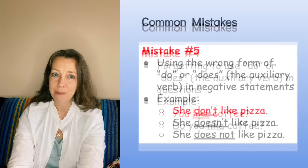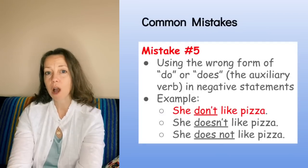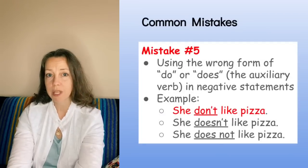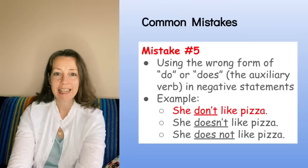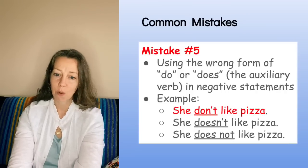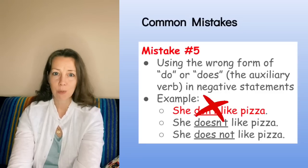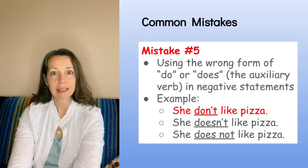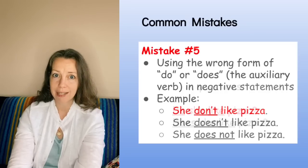Mistake number five is using the wrong form of the auxiliary verb 'do' or 'does' in negative statements. For example, 'She don't like pizza' is incorrect. The correct forms are 'She doesn't like pizza' or 'She does not like pizza.'